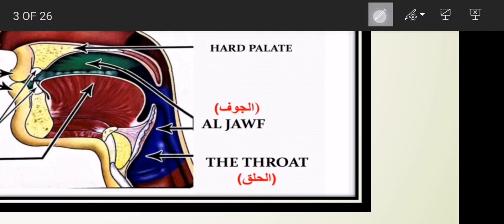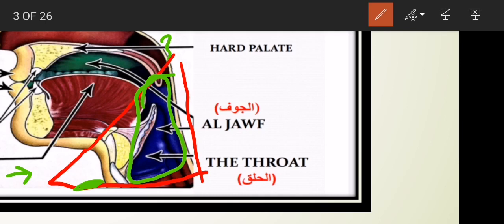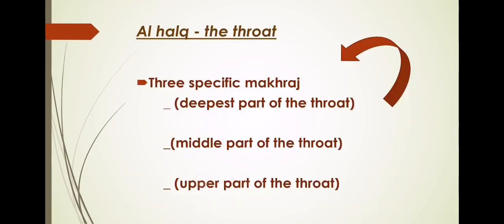Looking at the diagram, the blue colored area shown here represents Al-Halq. From this projected area to the back part of the ear — our ears are situated between our nose and lips — that triangular region is Al-Halq in the Tajweed explanation. Now we'll move to the specific divisions of the articulation point.